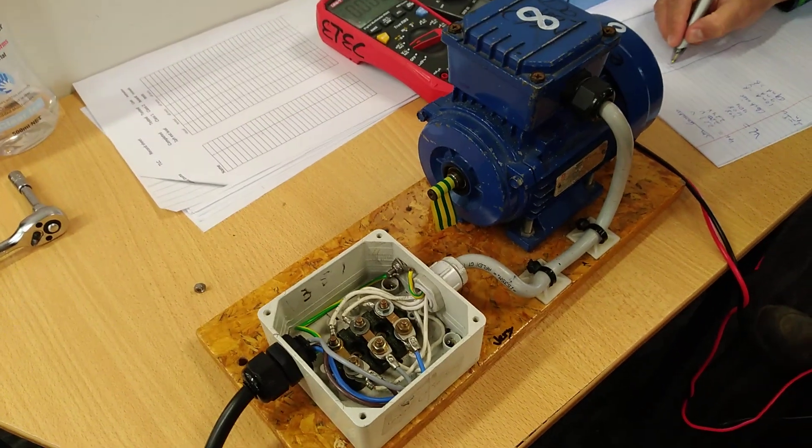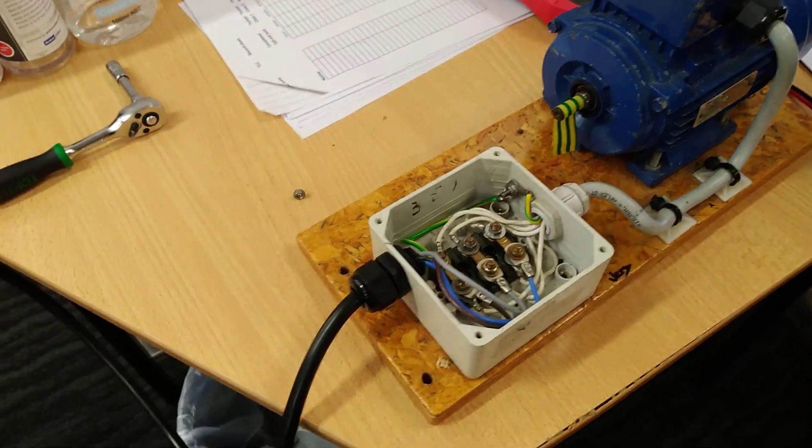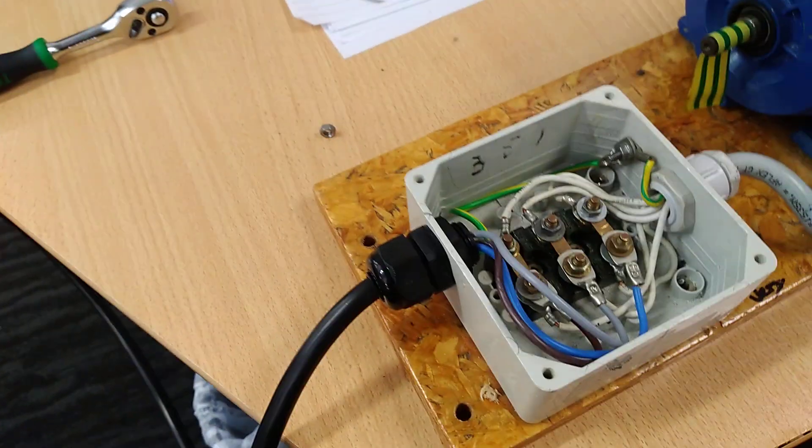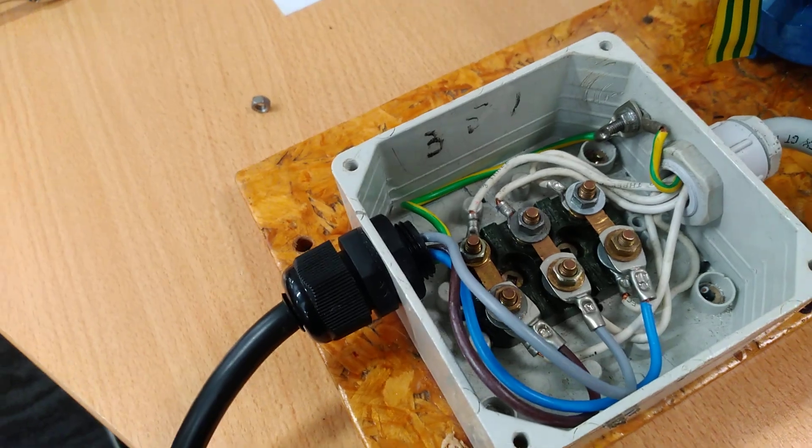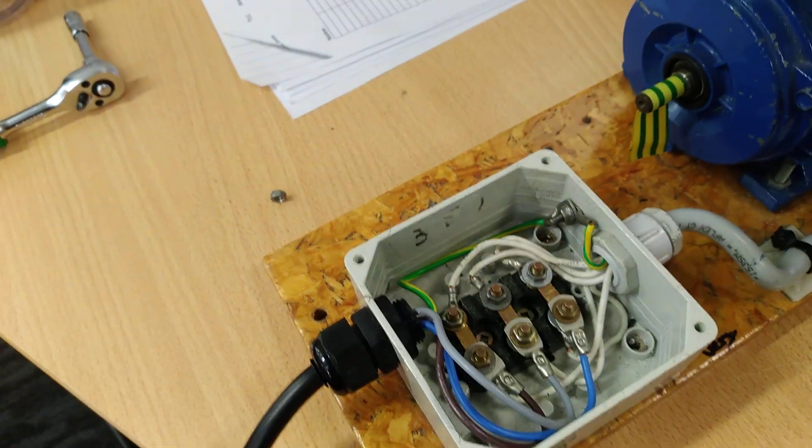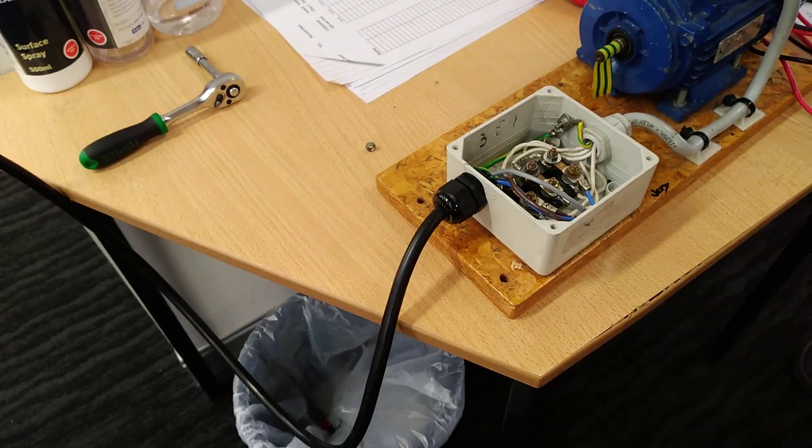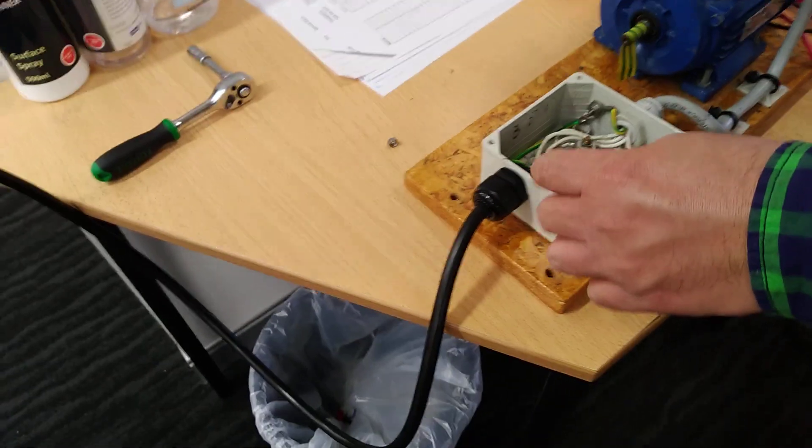Now we'll do the currents. Unfortunately we can only really measure the line current, because that's where we're going to be putting the clamp tester around. We can calculate the phase current though by root 3 if we like. So I'll get you to put your clamp tester around, and then we'll put the power on after you've got the clamp tester in place.